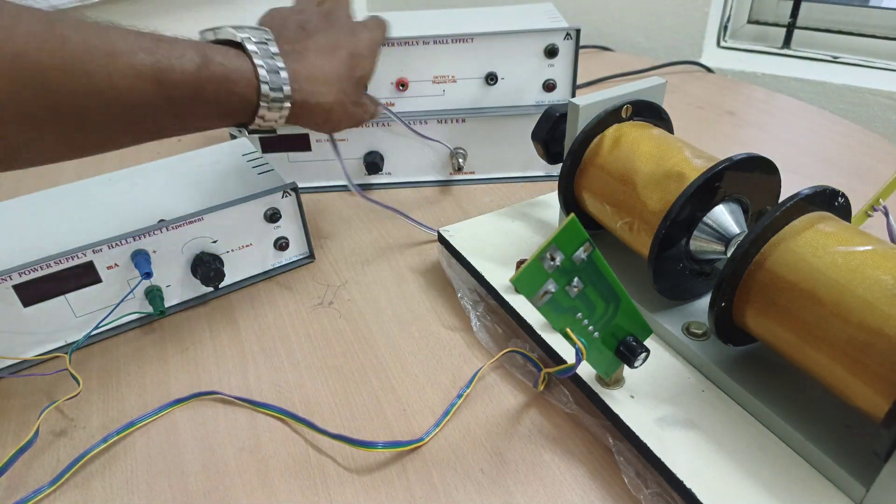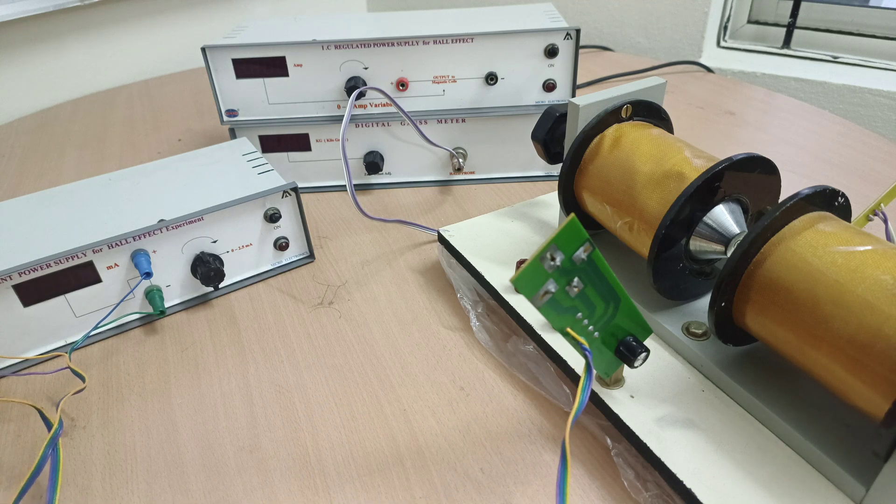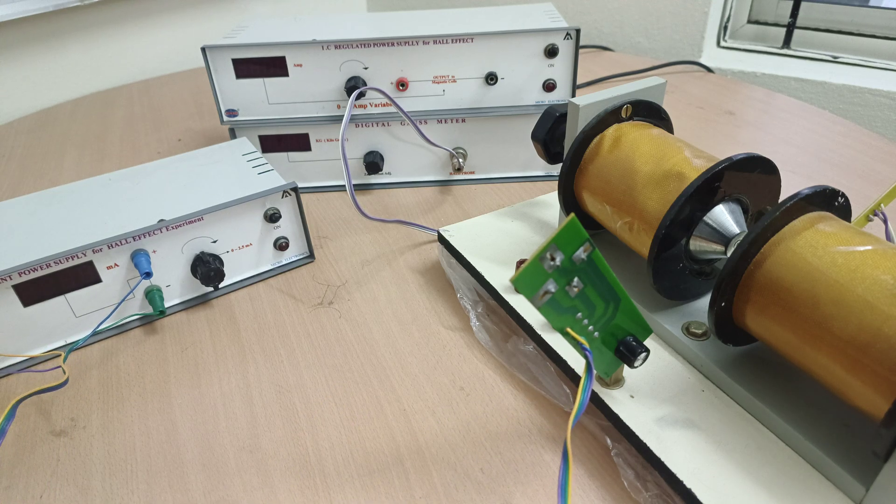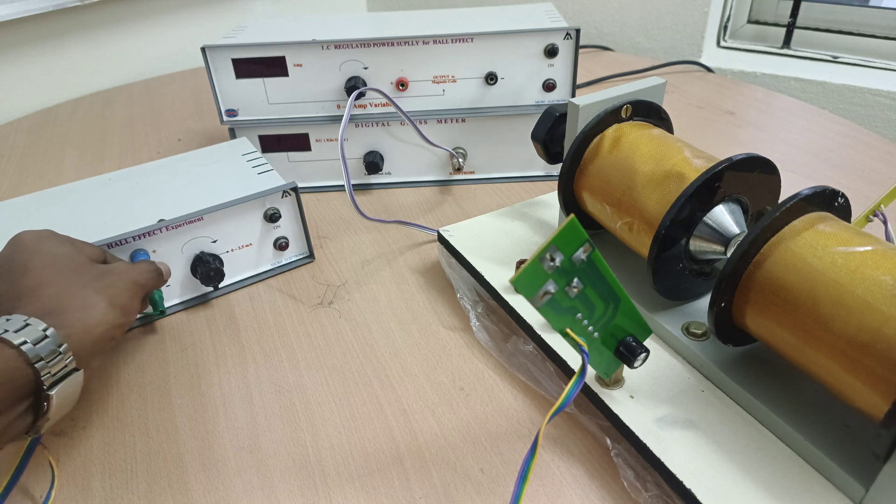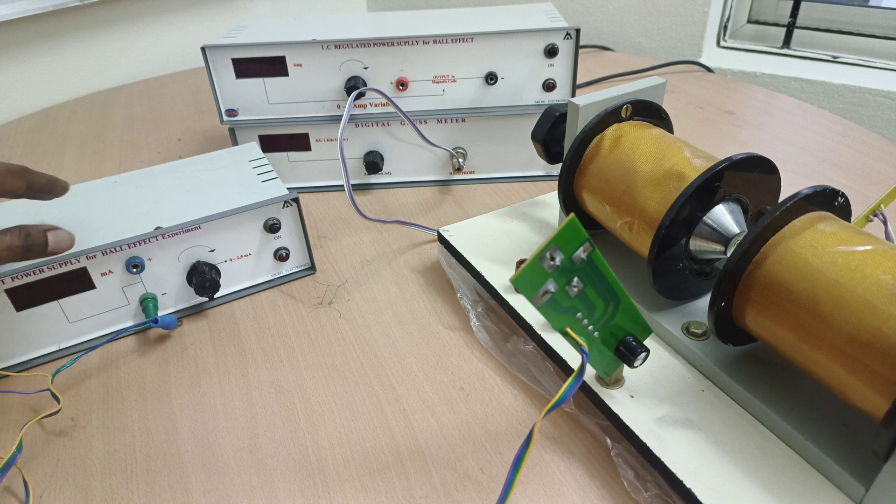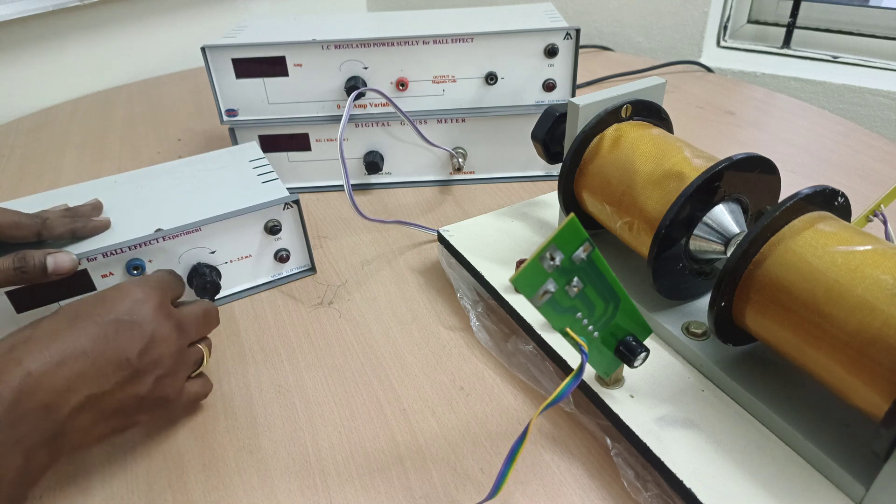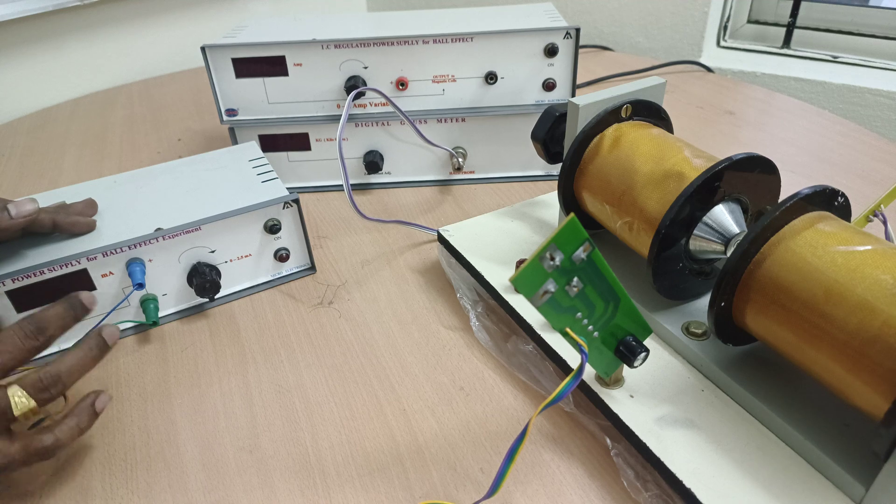Gauss probe is connected to the gauss meter and Hall probe is connected to the constant current power supply. Here you can see blue one is connected to blue terminal, very simple connection, and the red one is connected to red.